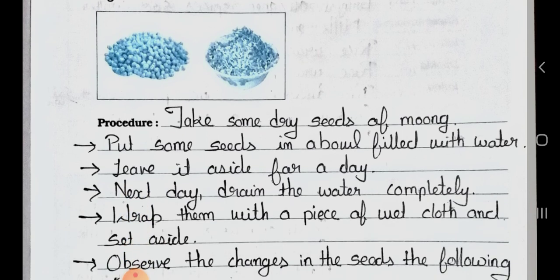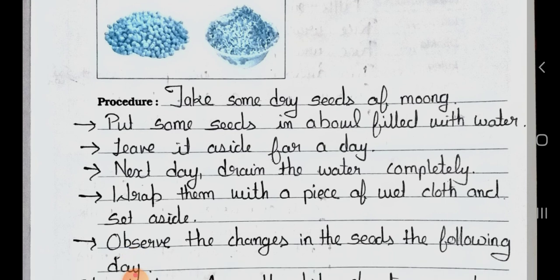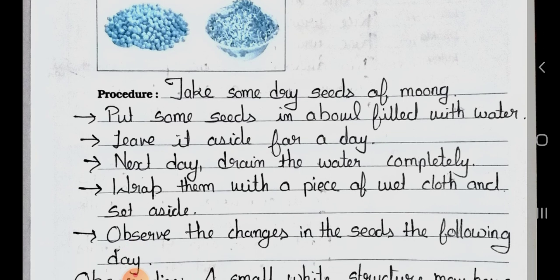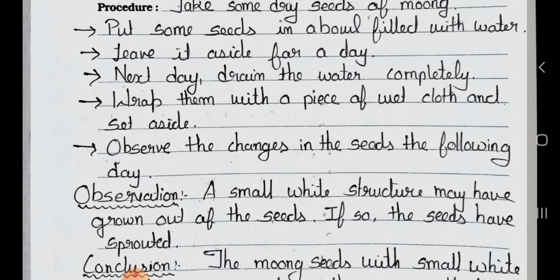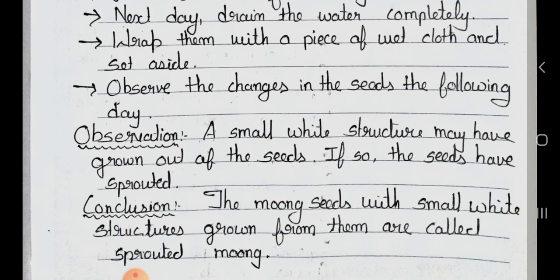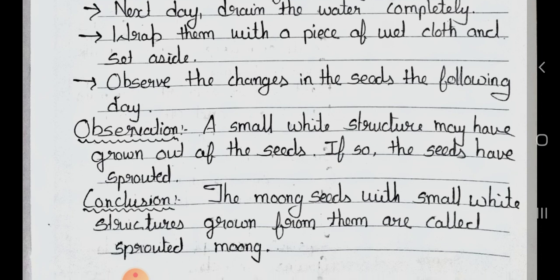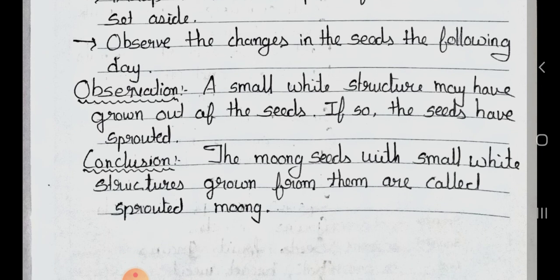Procedure: Take some dry seeds of moong. Put some seeds in a bowl filled with water. Leave it aside for a day. Next day, drain the water completely. Wrap them with a piece of wet cloth and set aside. Observe the changes in the seeds the following day. Observation: a small white structure may have grown out of the seeds. If so, the seeds have sprouted. Conclusion: the moong seeds with a small white structure grown from them are called sprouted moong.